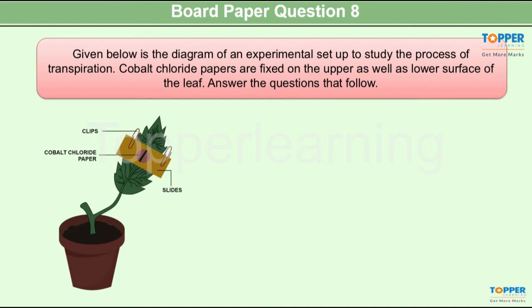Let us now quickly take up a question from the question paper. This is a diagram based question. The question says it's a diagram of an experimental setup to study the process of transpiration. Cobalt chloride papers are fixed on the upper as well as the lower surface of the leaf. Let us now see what are the questions based on this particular experiment.